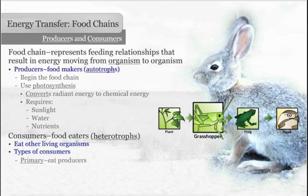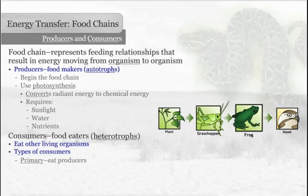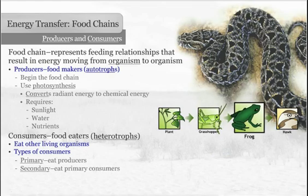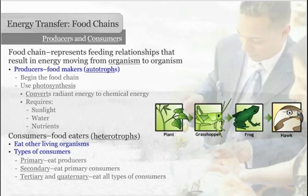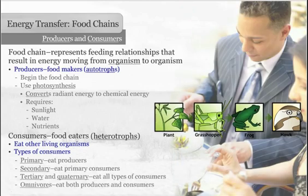Primary consumers eat plants. They are herbivores. Secondary consumers are carnivores that eat primary consumers. Tertiary and quaternary consumers are the third or fourth level consumers who prey upon all types of consumers. They are the top carnivores. Omnivores are consumers that eat both producers and consumers.